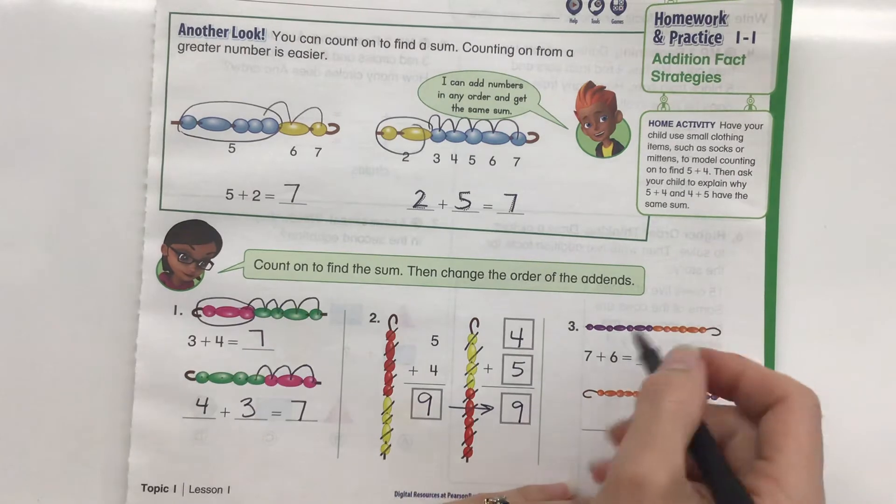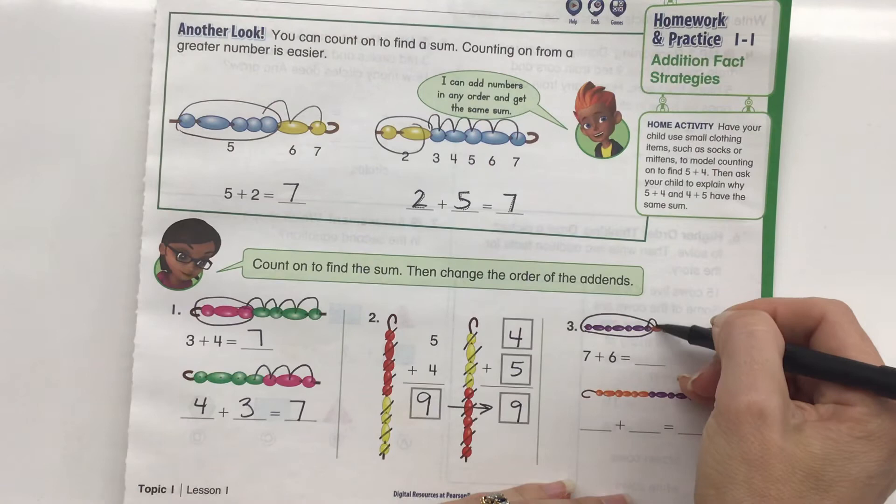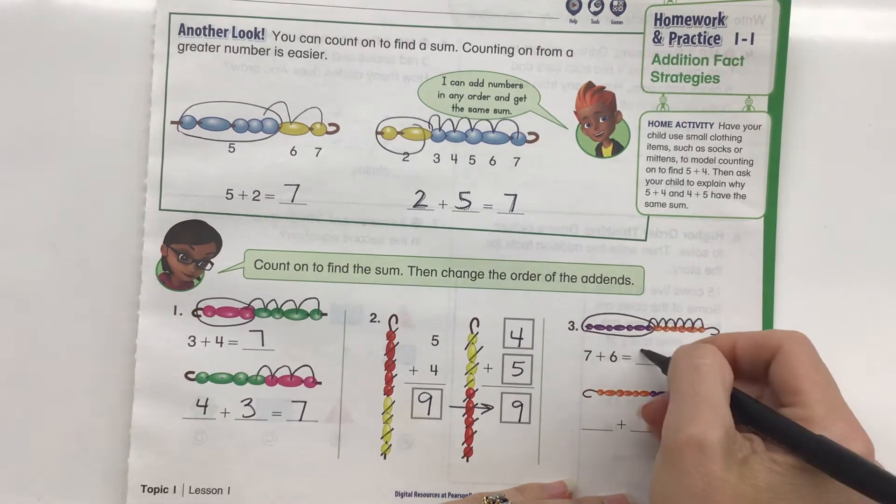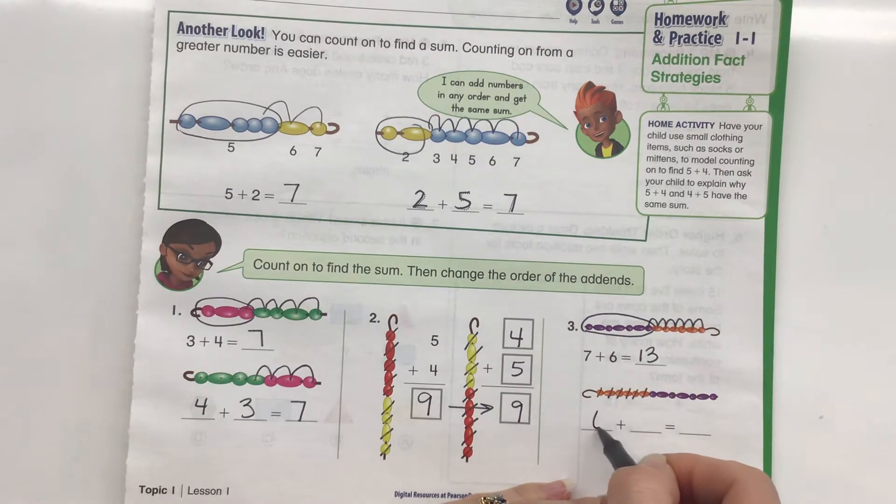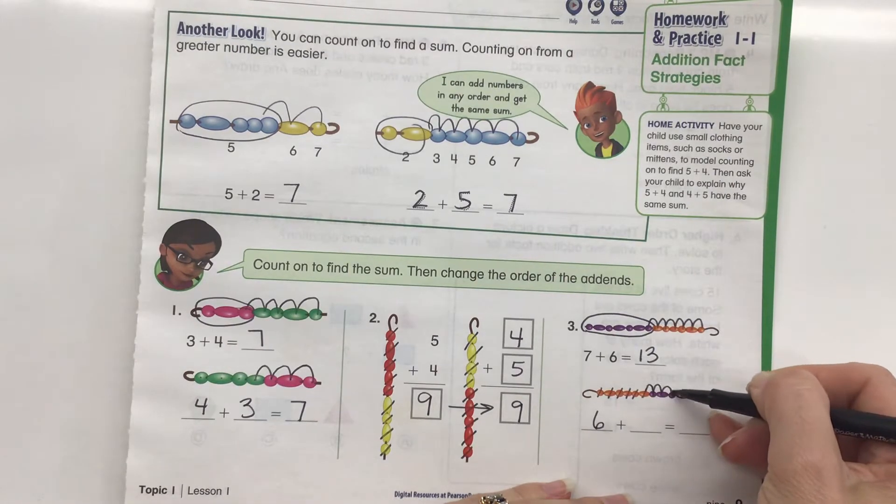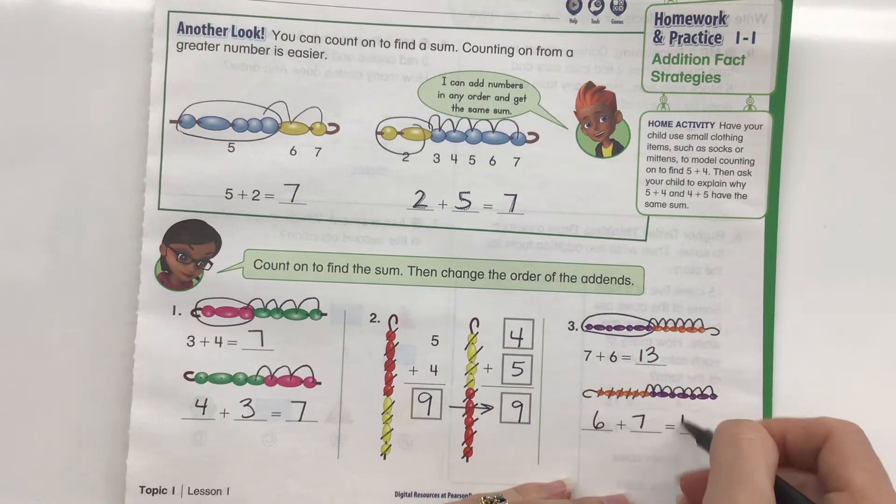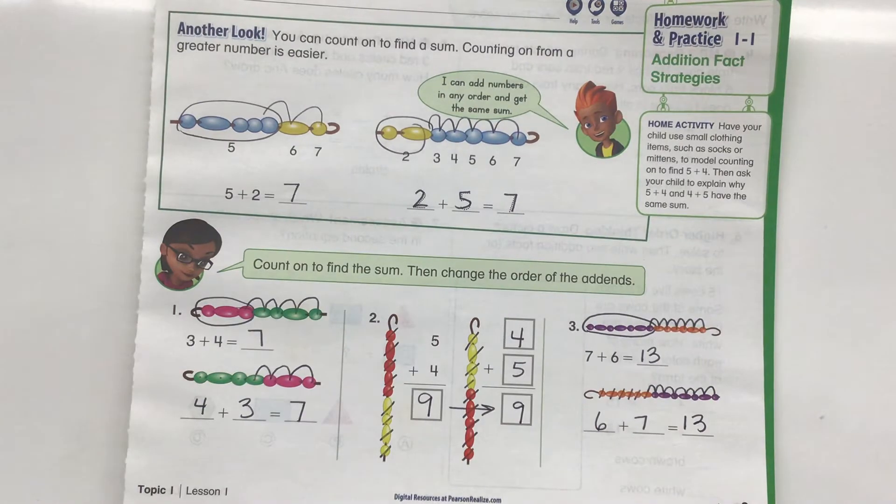Alright, 7 plus 6. So I have 7 here. I'm going to count on: 7, 8, 9, 10, 11, 12, 13. And then let's count how many are here: 1, 2, 3, 4, 5, 6. So 6. I'm going to count: 7, 8, 9, 10, 11, 12, 13. So we just change the order of the addends and we get exactly the same answers.